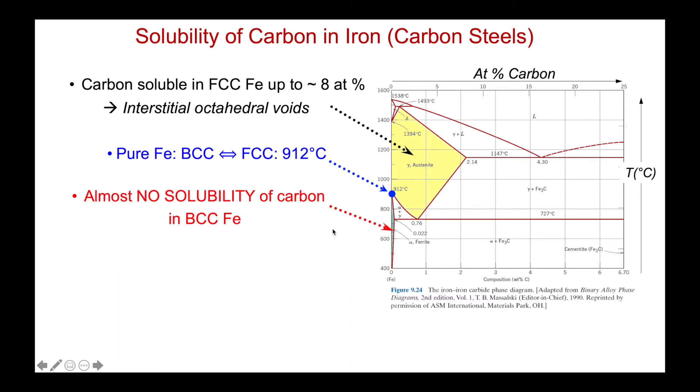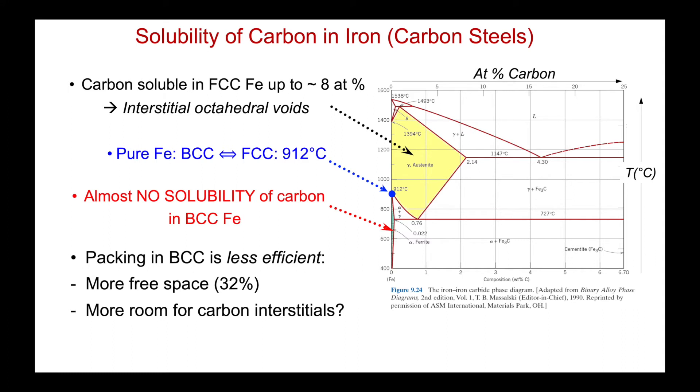However, let's look at the lower temperature portion of this phase diagram, which represents in this green region the solubility of carbon in body centered cubic iron. And we can see essentially it's almost zero. So again, the packing in BCC is less efficient. There's more free space. You'd think on the one hand there'd be more room for the carbon interstitials. So why is the solubility of carbon reduced in this more open structure? That's the question we'll attack in this video.